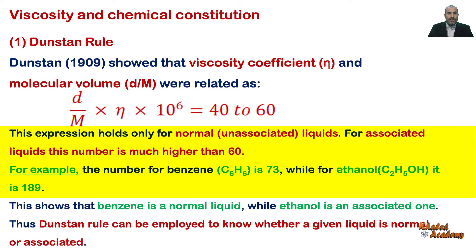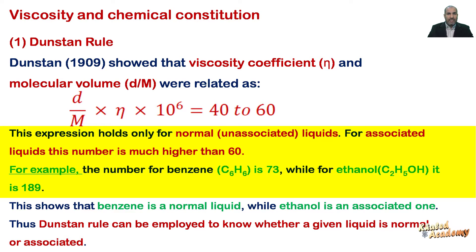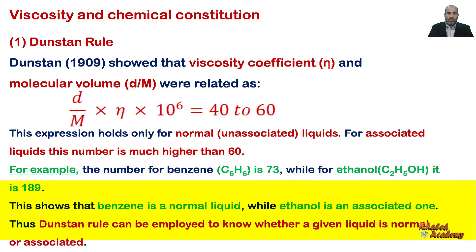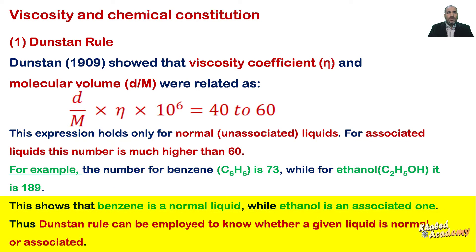This expression holds only for normal unassociated liquids. For associated liquids, this number is much higher than 60. For example, the number for benzene (C₆H₆) is equal to 73, while for ethanol (C₂H₅OH) it is 189, because ethanol is an associated liquid.